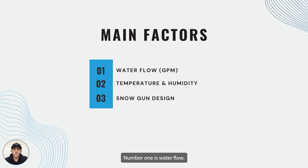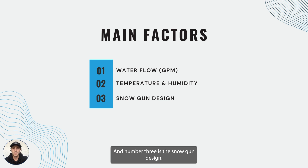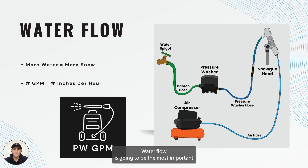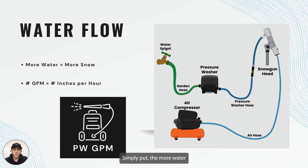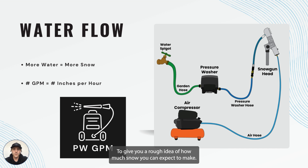Number one is water flow, number two is temperature and humidity, and number three is the snow gun design. Water flow is going to be the most important factor that affects snow output. Simply put, the more water moving through the system, the more snow will be produced.